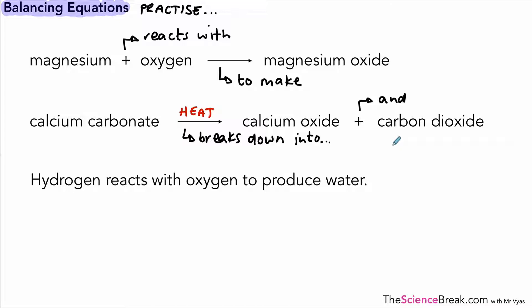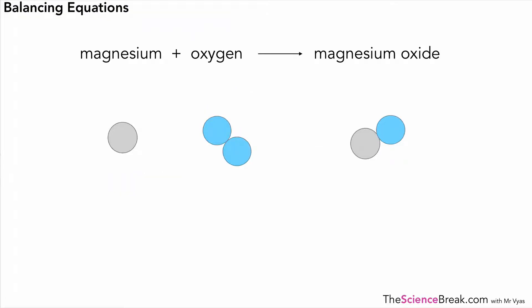Now the last equation at the bottom is actually not an equation, it's a sentence describing a reaction and we can convert that into a word equation. So what we have is hydrogen which reacts with oxygen, and we know that reacts with we can just replace with a plus sign, and to produce can be replaced with our arrow. So then we can have a word equation that looks like this: hydrogen plus oxygen react together to make water. And this is a word equation. We don't actually balance word equations. What we balance are symbol equations.